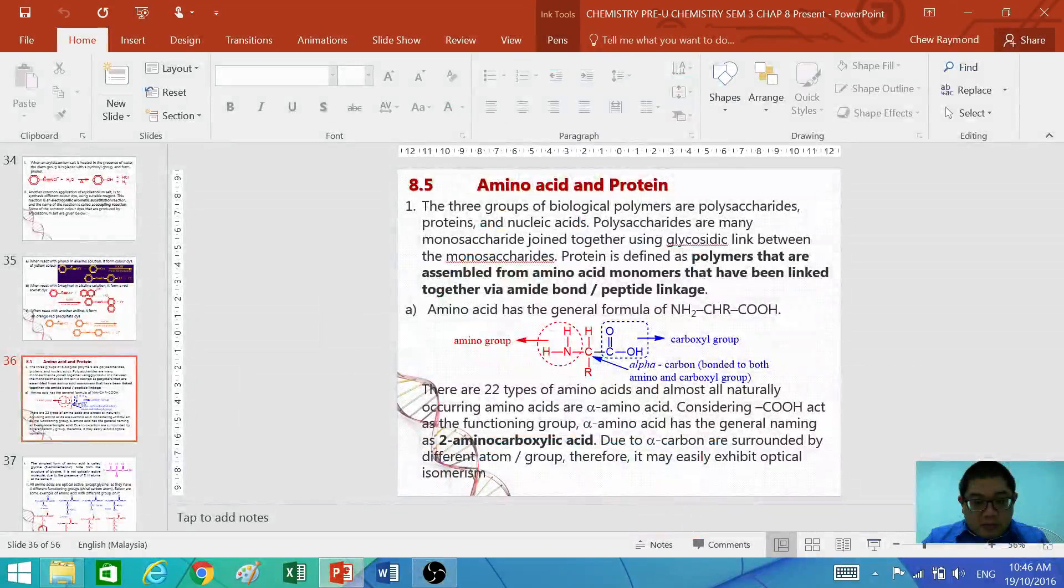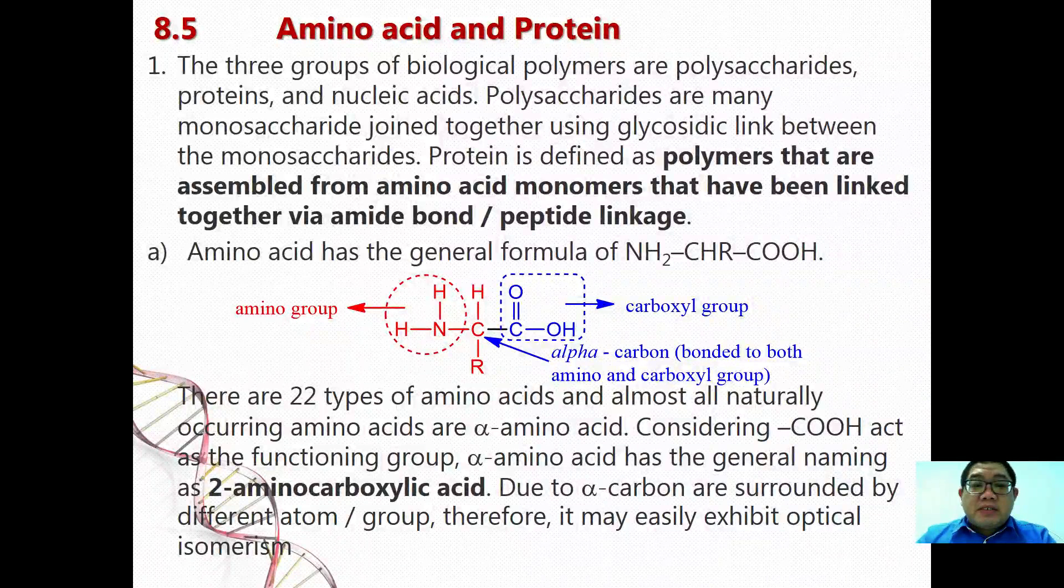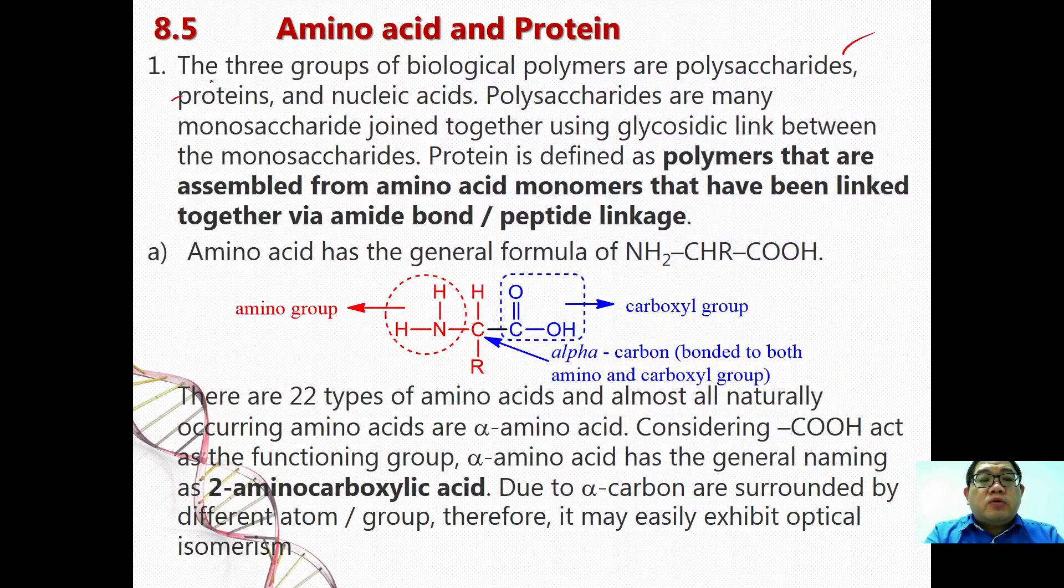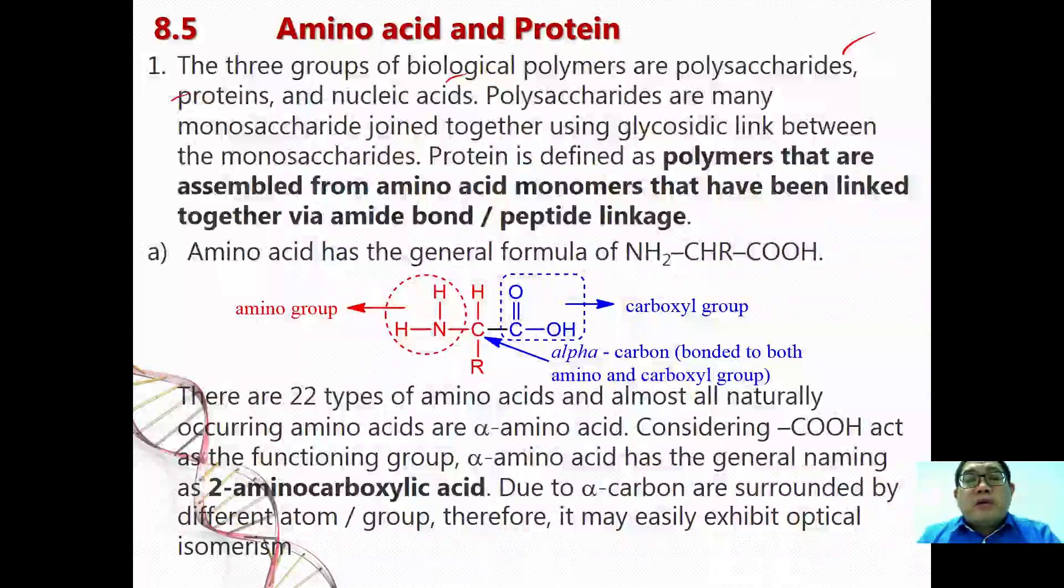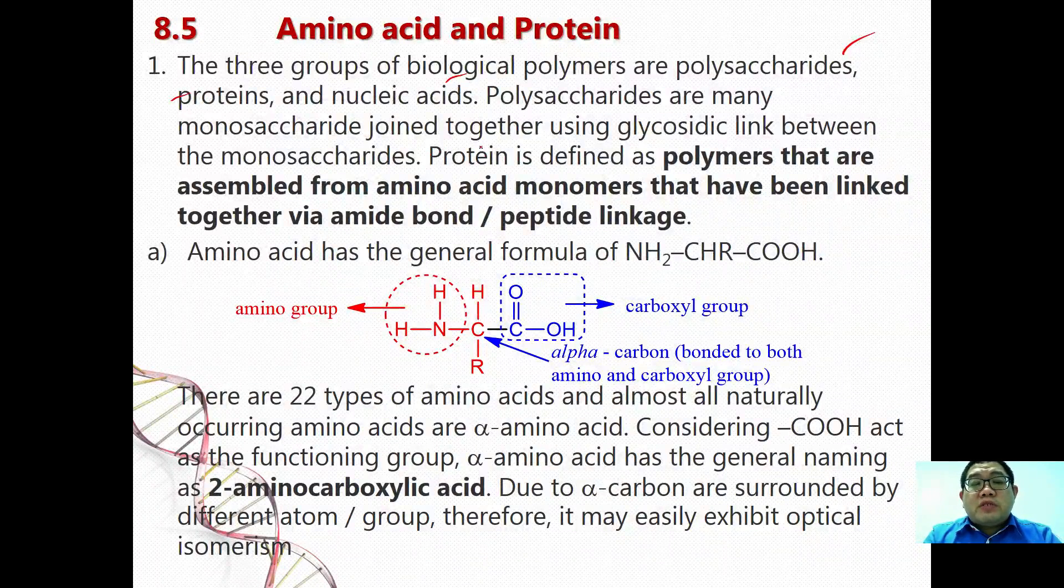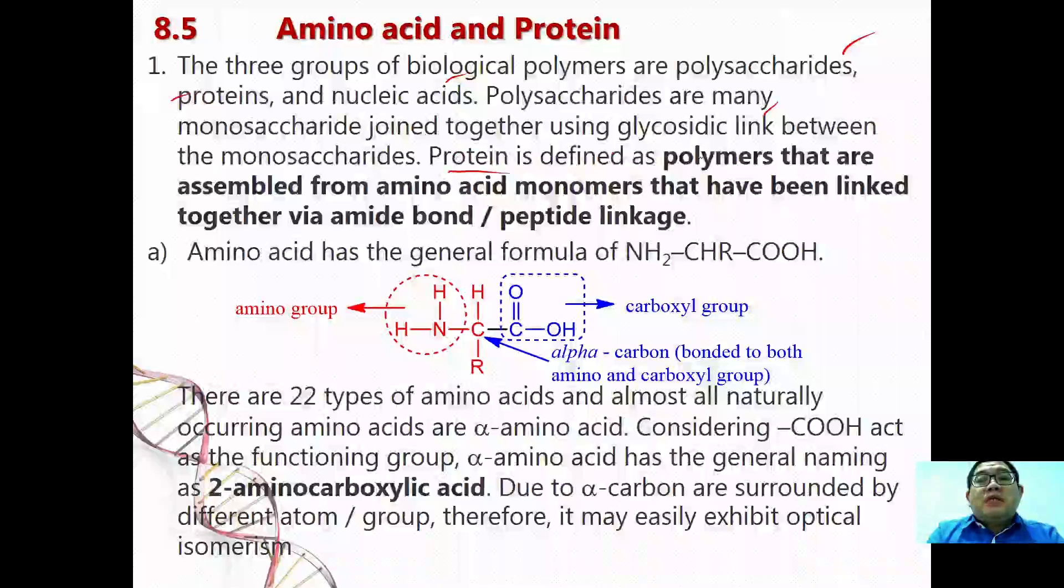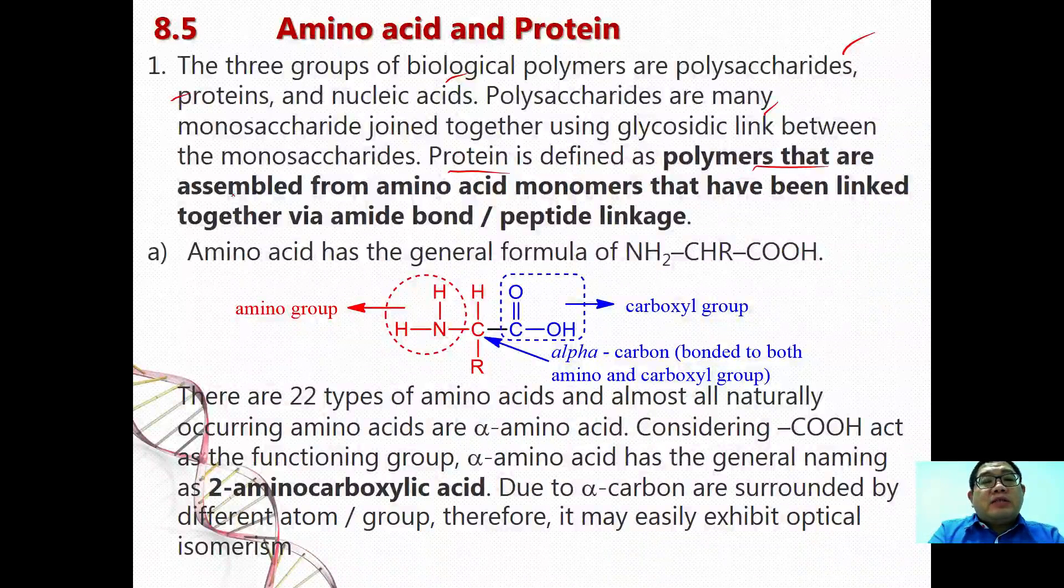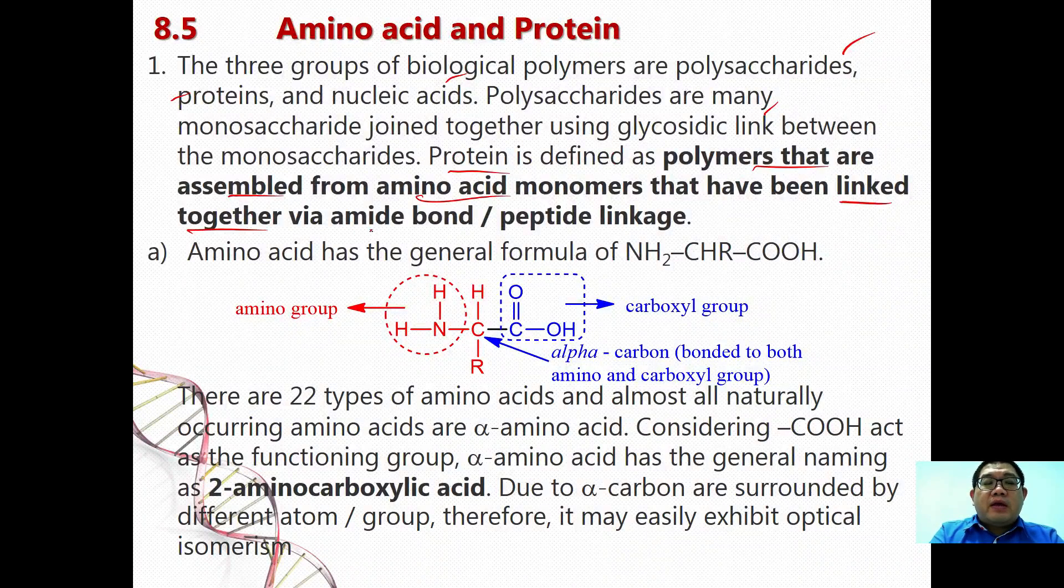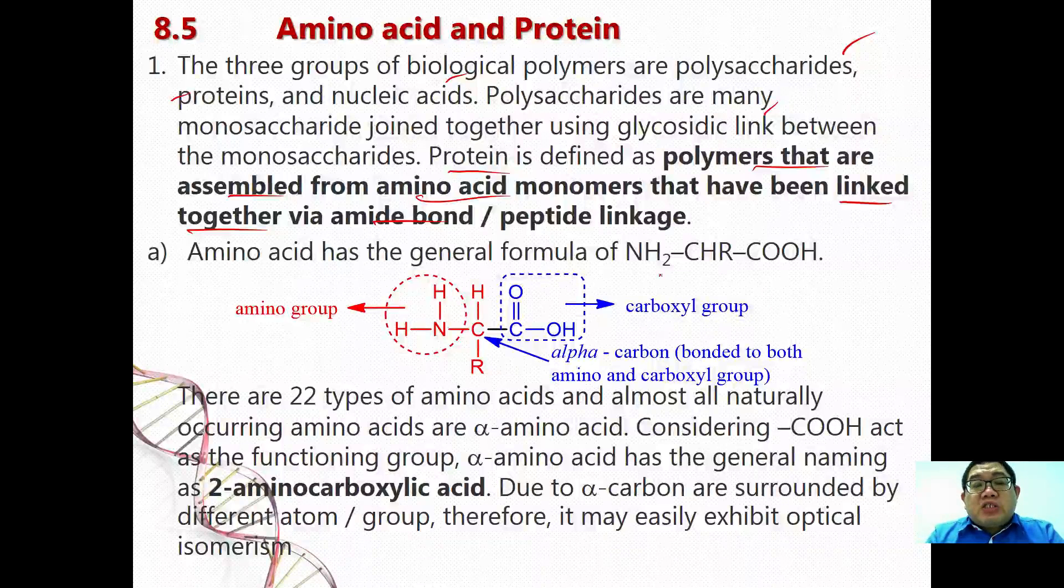Okay, last but not least, we are going to have a look at amino acid and protein. Now the three biological groups of polymer are polysaccharide, protein, and nucleic acid. We learned polysaccharides in chapter 6 previously, where polysaccharides are mainly monosaccharides joined together by using glycosidic link. Whereas protein is defined as polymer that are assembled from amino acid monomer that has been linked together via amide bond or peptide linkage.